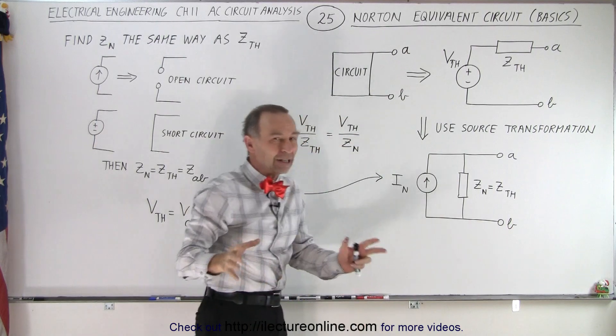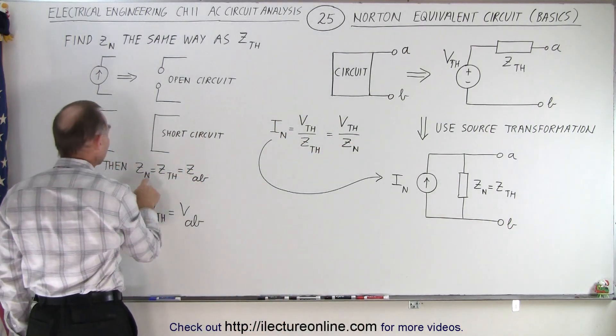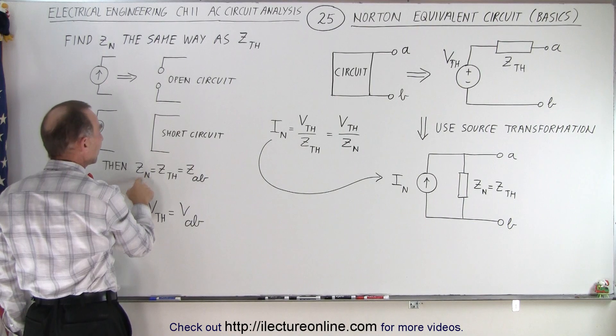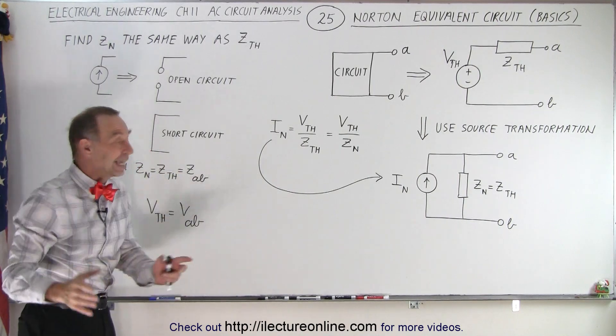So whatever is left in the circuit, then you find the impedance. That's then the Thevenin impedance, which is of course the Norton impedance, which is essentially the impedance across A and B once you've done this.